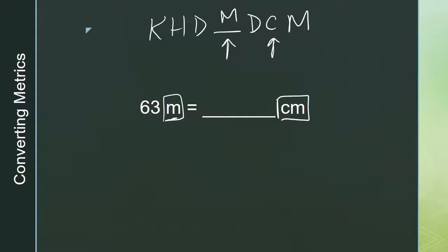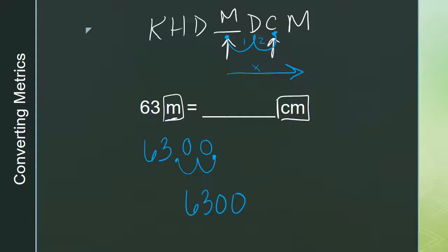The next thing I do is draw the move. I take my decimal point, which currently lives in the meters, and move it to where it wants to go — one, two. It took two hops, and I'm moving to the right, so my number is actually getting larger because I'm multiplying by 10. The thing really moving is the decimal point. Looking at the number 63, the decimal is at the end, and it moves two places — one, two. I fill empty spaces with zeros and never leave my answer a hot mess. My answer is 6,300. So 63 meters is equivalent to 6,300 centimeters.